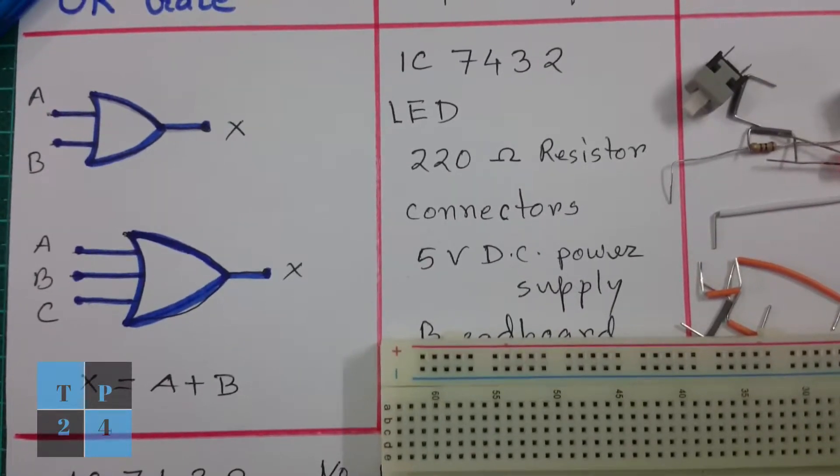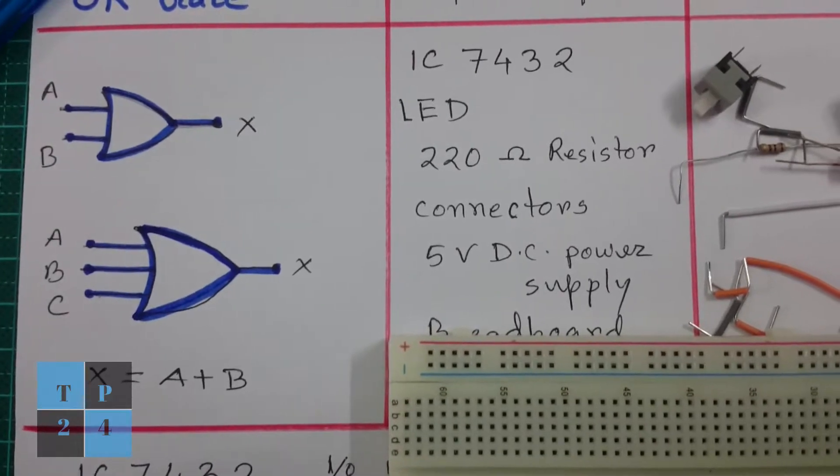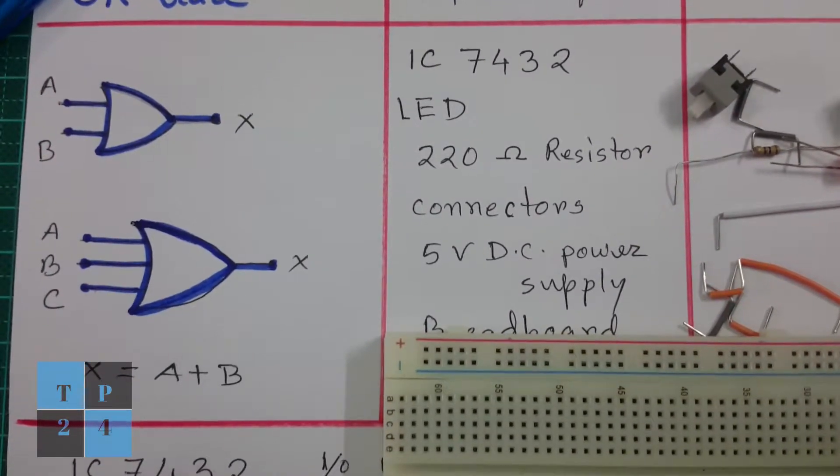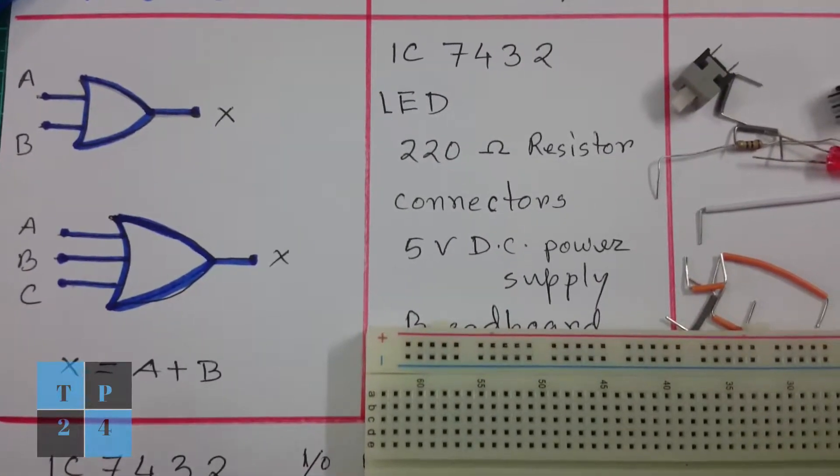The basic element of digital systems is logic gates. We will study different logic gates and their input-output operational behavior in this series. Today I will explain the OR gate.